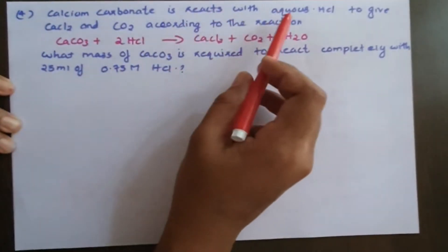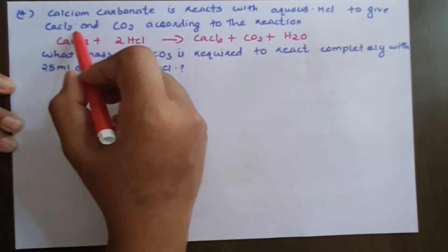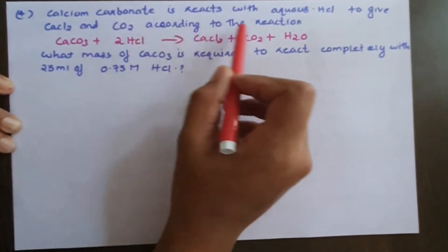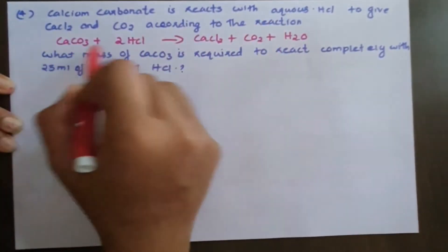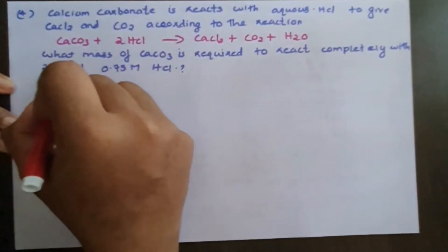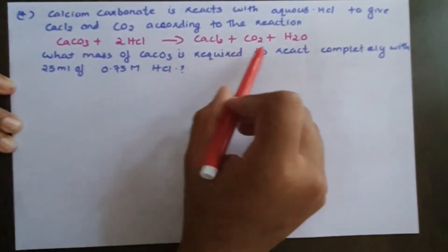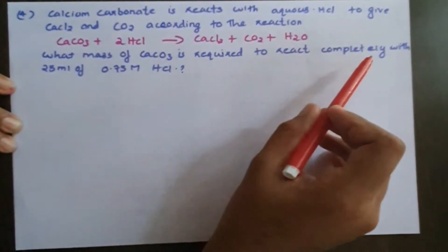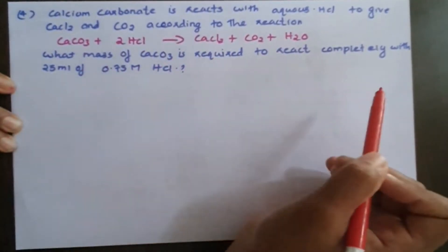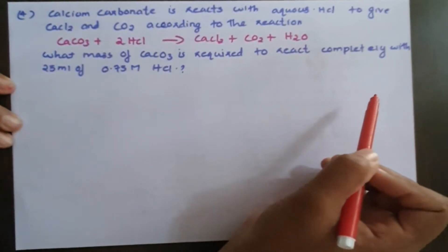Calcium carbonate reacts with HCl to give calcium chloride and carbon dioxide. What mass of calcium carbonate is required to react completely with 25 mL of 0.75 molar HCl?